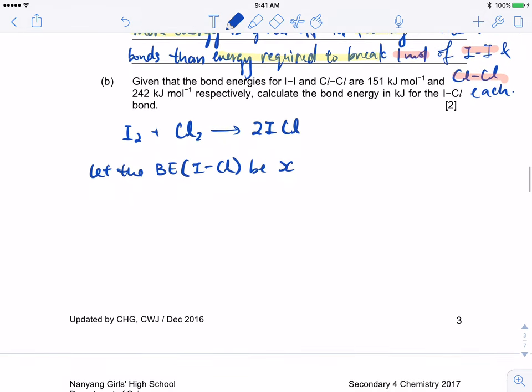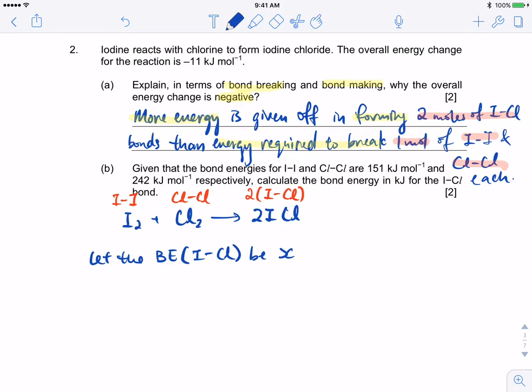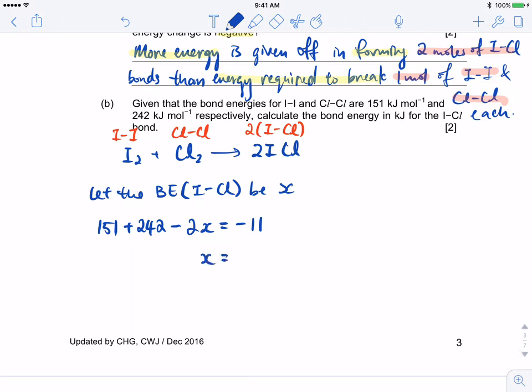Next question. Given that the bond energy for I-I single bond and Cl-Cl single bond is this, calculate the bond energy in kilojoules for the ICl bond. For this question, you must first write out the equation. You will see there's one I-I bond breaking, one Cl-Cl bond that's also breaking, and we have two of the ICl bond that is being formed. How can I solve this? You know that the overall enthalpy change is negative 11 kilojoules.